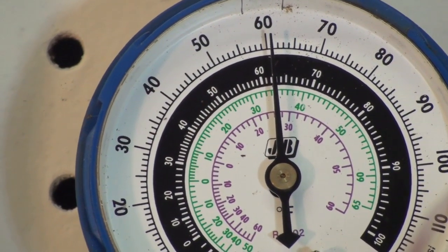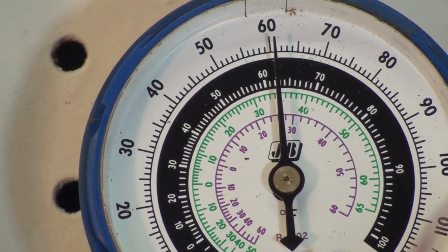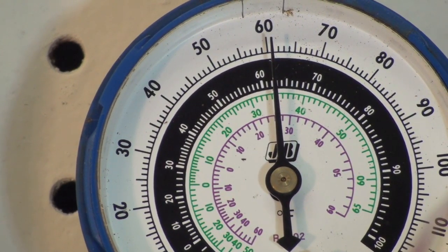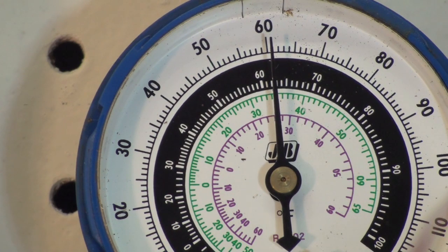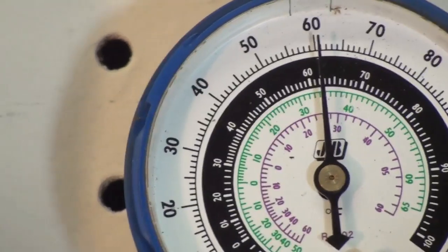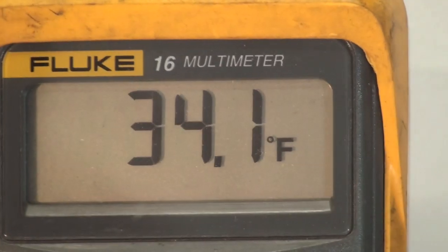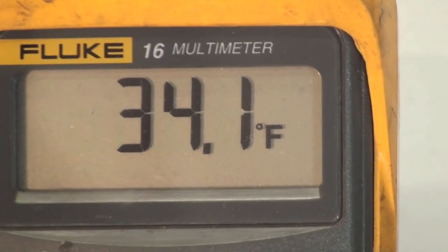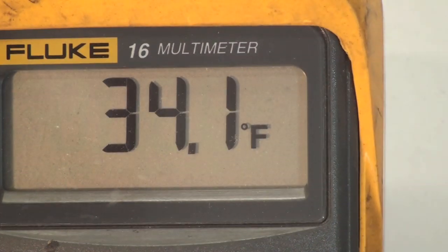Okay, looks like we're about 61 and right at 35 degrees. 61 equals right about 35 degrees. Okay, let's go over and look at what the temperature probe says. It says 34.1. It's an accurate representation of what the temperature is.